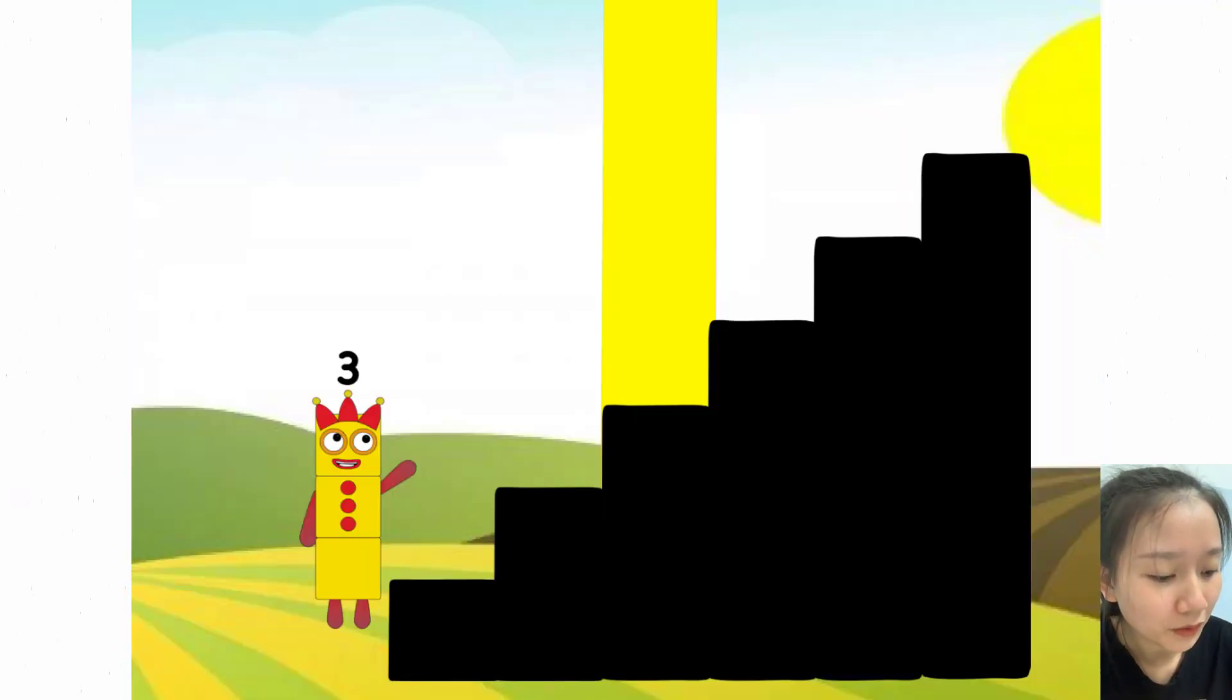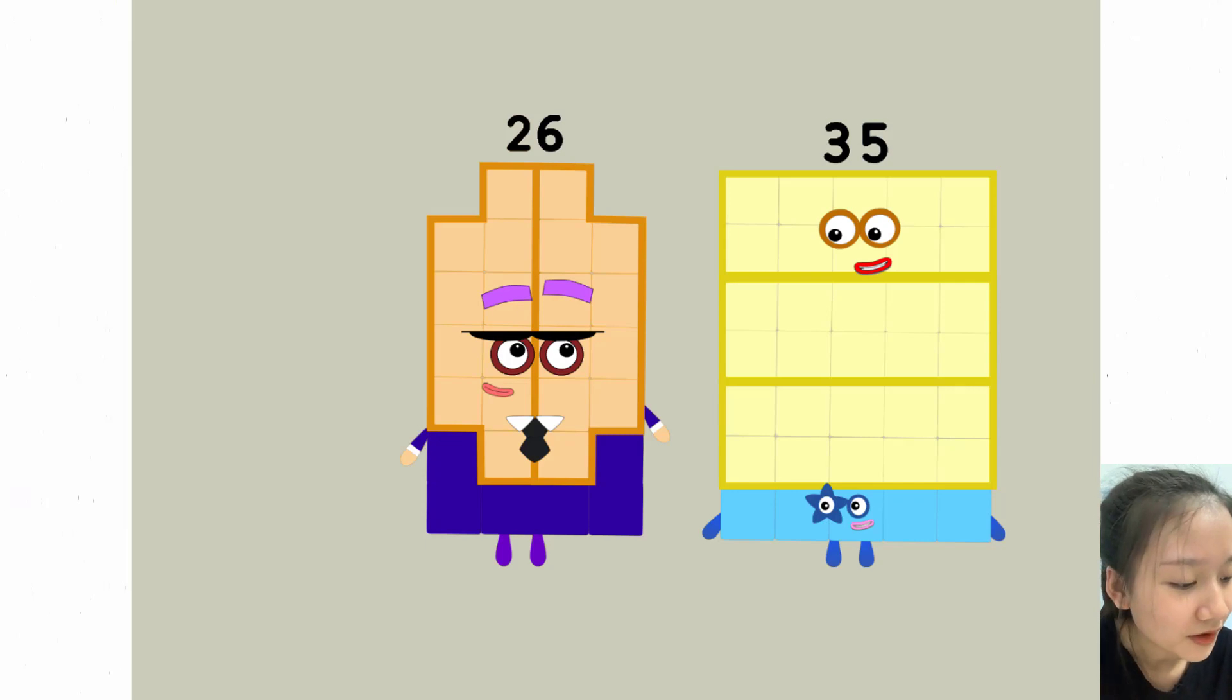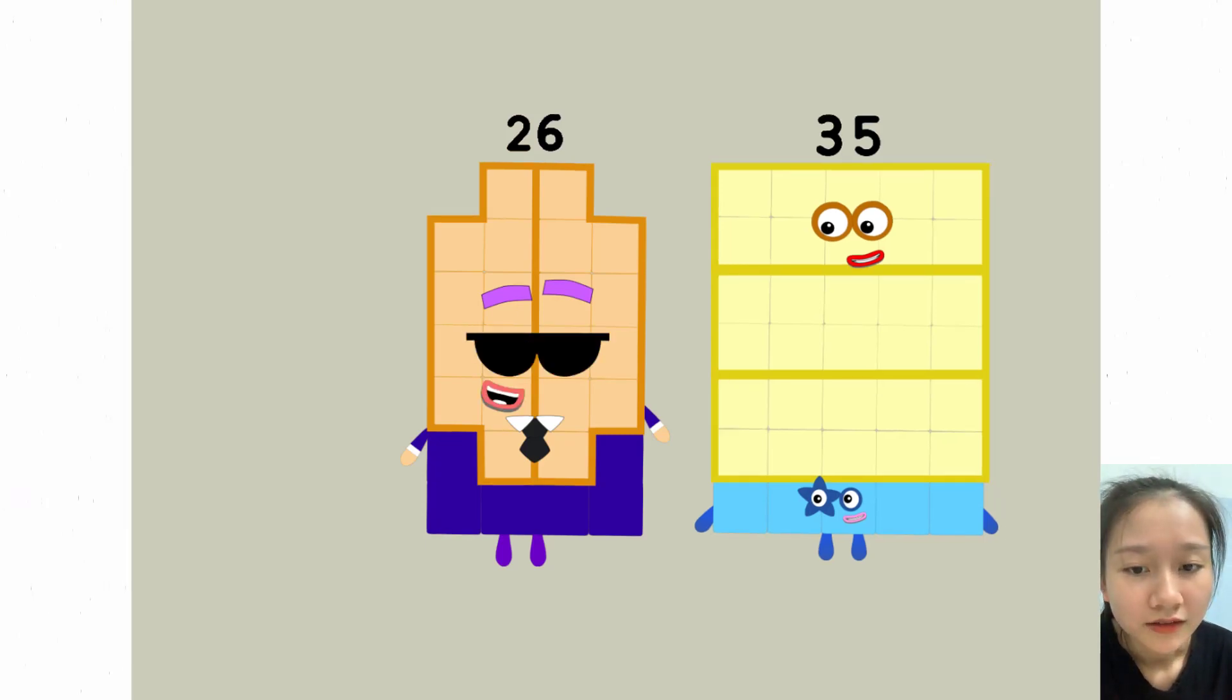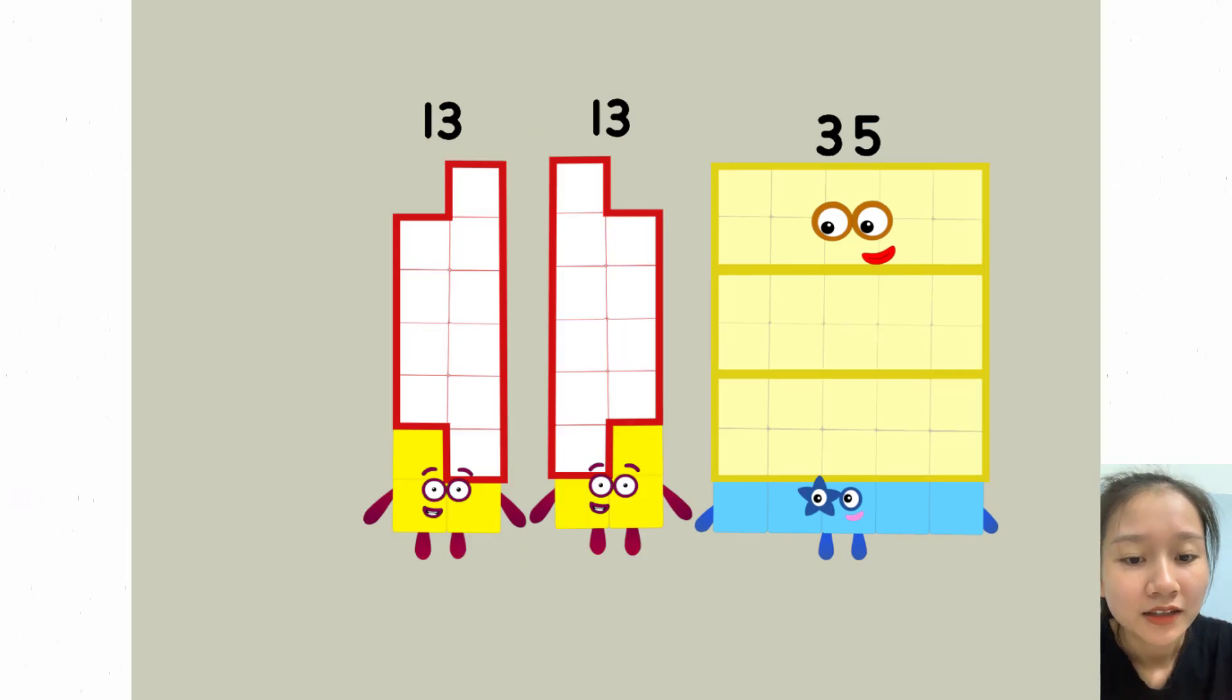Step 3. Secret Agent. Hey 35, welcome to the M15 secret agent office base. Thanks. Don't say it. 26. Oops. Double 13. Oops.